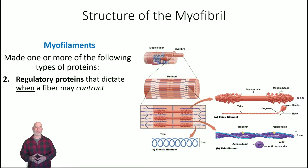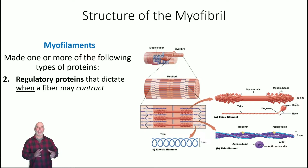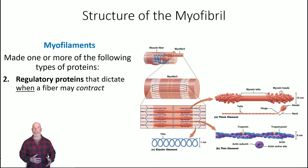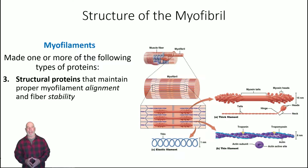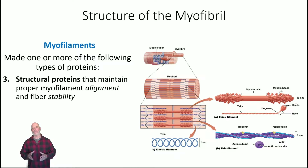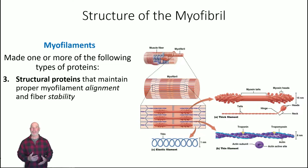Myofibrils are also comprised of regulatory proteins, which dictate when a fiber can contract — so we can control when they contract and when they don't. We also have structural proteins, and these help maintain a proper myofilament arrangement needed for stability, because these filaments are all in parallel and you don't want them to get out of order or a muscle won't function correctly.